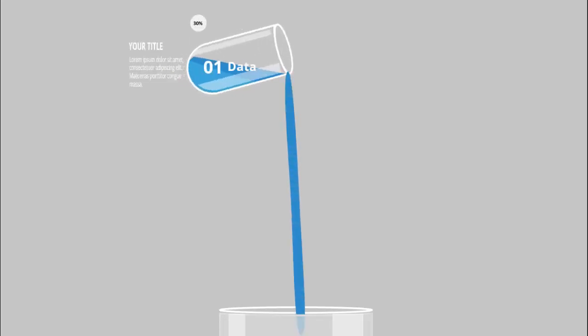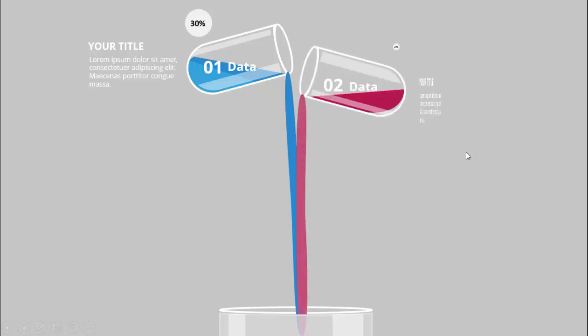In today's tutorial I'm going to show you how to create four glass test tubes infographic slide in PowerPoint. This is how the slide works: when I click, you can see the first glass test tube comes in. I've put some liquid here and the liquid is pouring out and going to the other container. I put the text '01 data' and you can add detailed text, a title, and a percentage. When I click, the second one comes with a different color.